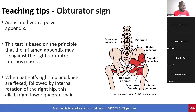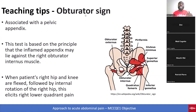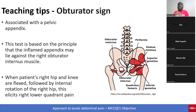Appendicitis is not just about knowing it involves right lower quadrant pain, fever, increased white blood cell count, and appendectomy. There are details you need to know. This exam is passable — there are specifics about these physical exam maneuvers that you must master.